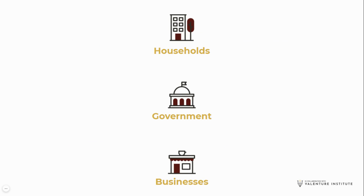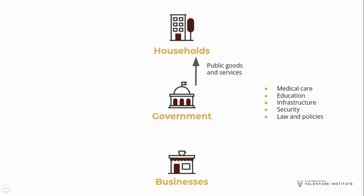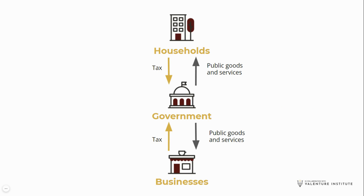But what about the third participant, the government? The government provides public goods and services to households — for example, medical care, education, infrastructure such as roads and bridges, security, and law and policies. These public goods and services are also available to businesses. To provide these, the government needs an income. That income is tax that it collects from households and businesses.